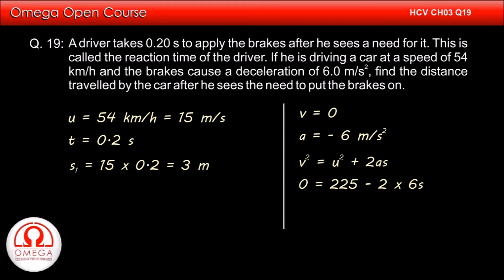Putting the values, we get 0 is equal to 225 minus 2 into 6s. Simplifying, we get s is equal to 225 divided by 12 or 18.75 meters.